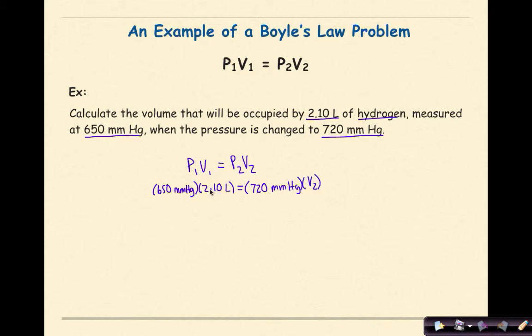If I multiply 650 times 2.10 and divide by 720 mm Hg, my new volume is 1.90 liters. And that's a brief example of how to do a Boyle's Law problem where temperature and the number of moles of gas are held constant.